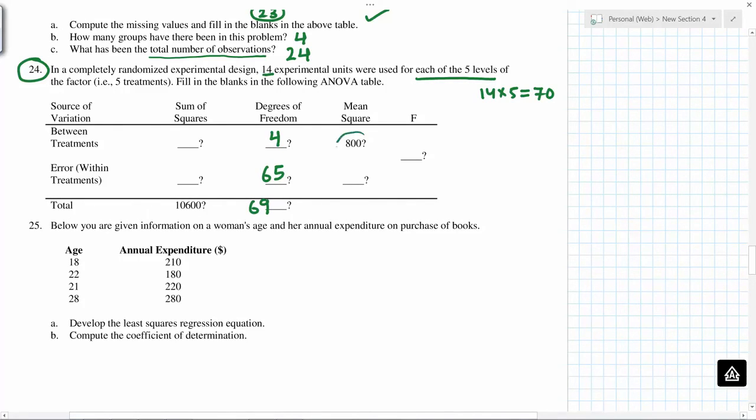So now 800 times 4 is 3200. And then from the total, you subtract 3200, you get 7400. So 7400 divided by 65 will give you 113.8 and then 800 divided by 113.8 will give you 7.03.